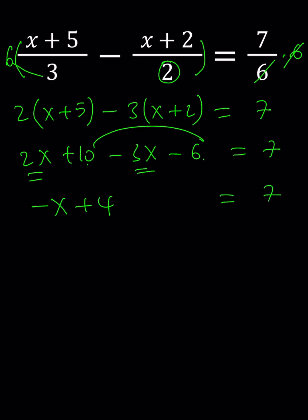Remember, our goal is to solve for x. If you want, you can add x to both sides or subtract 4 from both sides — it's totally up to you. But I'm going to go ahead and subtract 4 from both sides to isolate negative x. Negative x equals 3.